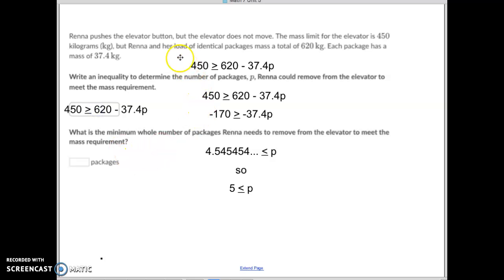So our equation, which we typed up right at the very top, and then solving it, we got our number of packages that we had to remove to be 5. That's how you do it, guys. Good luck to you. Bye-bye.